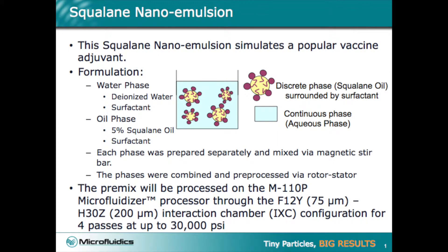The squalene nanoemulsion simulates a popular vaccine adjuvant. The formulation is made up of a water phase and an oil phase, both containing a surfactant.